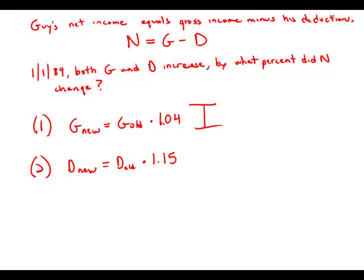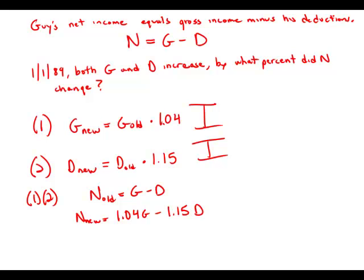The real crux of this problem is what happens when we put these things together. We know that the old net income was the old gross minus the old deduction. The new net income should be 1.04G minus 1.15D. The question is, can we figure out anything about this? Here I think it might be helpful to think about some numbers.